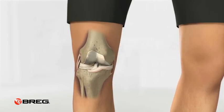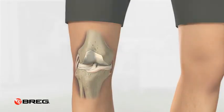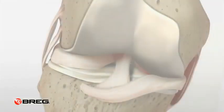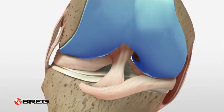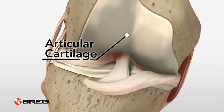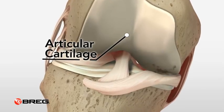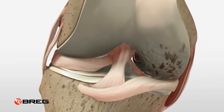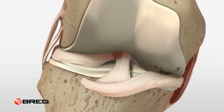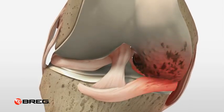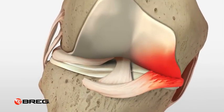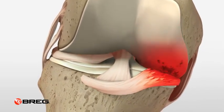Along with damage to the meniscus, articular cartilage can wear away over time, causing a narrowing of the joint space. When this shock absorption is lost and the joint space narrows, bone can rub against bone, causing pain.